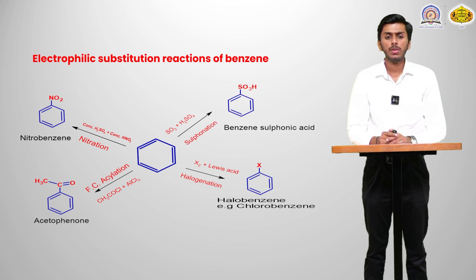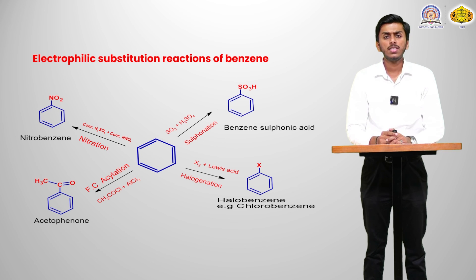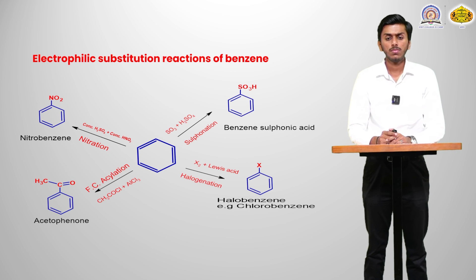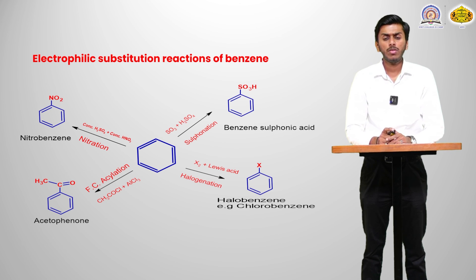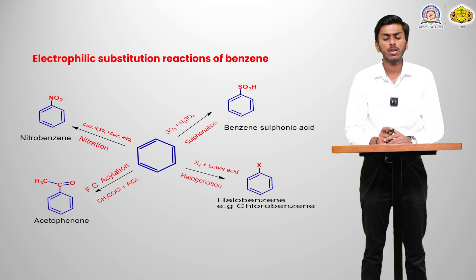Electrophilic substitution reactions of benzene: benzene on treatment with concentrated H2SO4 and concentrated HNO3 gives nitrobenzene — this is nitration. Second, benzene reacted with concentrated H2SO4 gives benzene sulfonic acid — sulfonation, where H is replaced by the sulfonyl group SO3H. Third, halogenation: benzene on treatment with a halide in the presence of a Lewis acid gives halobenzene, for example chlorobenzene or bromobenzene. Lastly, Friedel-Crafts acylation, in which an acyl chloride or acyl bromide in the presence of an alkyl halide gives an electrophilic substituted product.